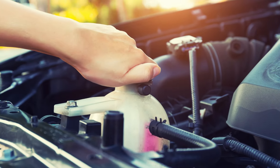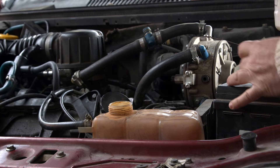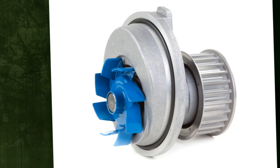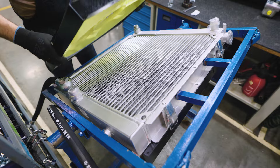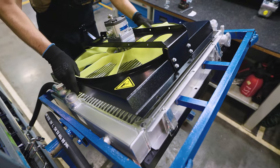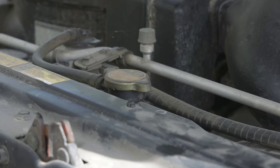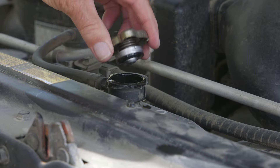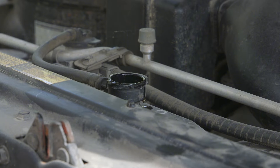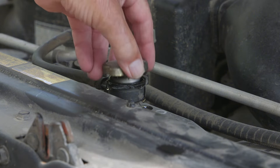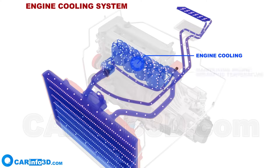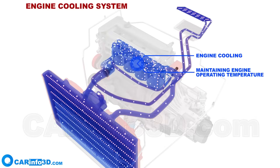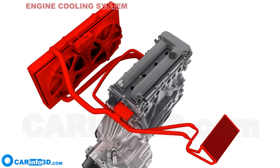The cooling system in your car is composed of several parts. Two components are involved in the process of controlling coolant temperature: a thermostat and a water pump that pushes coolant to the motor. The radiator's function is to lower the coolant's temperature after it exits the engine.